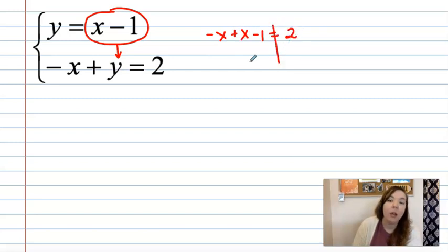Now when I go to solve this negative x plus x is 0 and they're going to cancel out. And I'm going to be left with negative 1 equals 2. That is not a true statement. Therefore I have no solution.